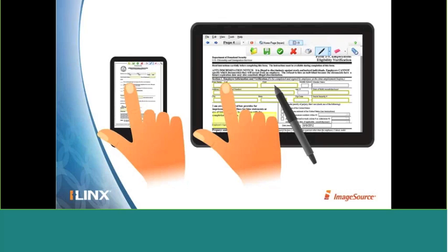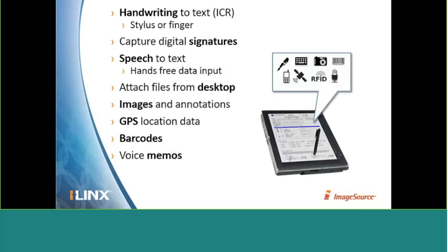AIIM says that 42% of form processes are interrupted to collect a physical signature, and on average this adds three days to the process — eliminating that can really cut down on your cycle time. You saw how eForms' built-in ICR character recognition works — I could write into a field and have the ICR component automatically convert that to text. You can also incorporate advanced third-party digital signature technology if you need to go beyond handwritten input. iLinks eForms also has built-in speech-to-text for hands-free input, the ability to attach content from your desktop, embed images and annotate on top of them, and collect advanced information such as GPS data, barcodes, voice memos, and even RFID information.